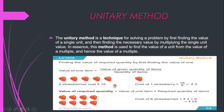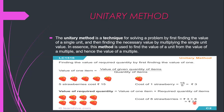Five strawberries cost 15 rupees. First find the cost of one strawberry: 15 ÷ 5 = 3 rupees. Now find the cost of 8 strawberries: 8 × 3 = 24 rupees. So the cost of 8 strawberries is 24 rupees. In unitary method, first find the cost of one item, then multiply by the required number of items.